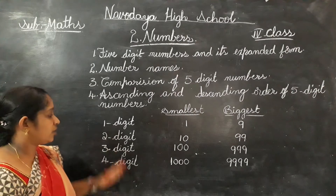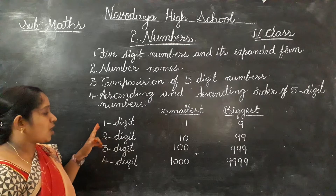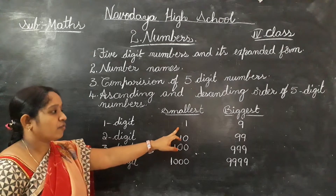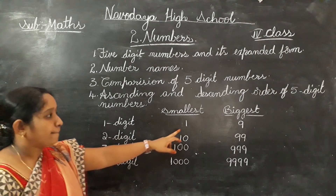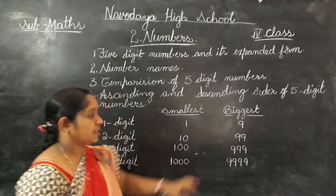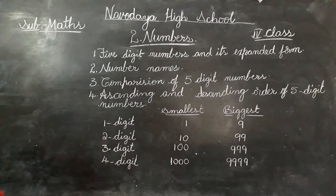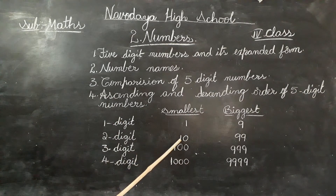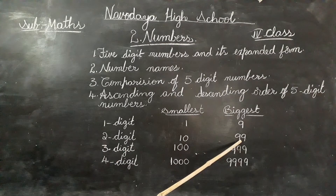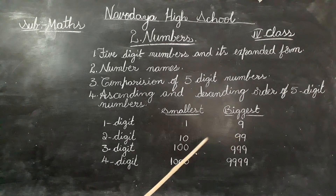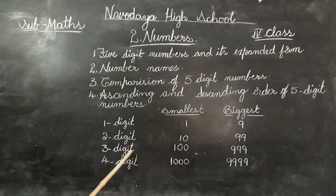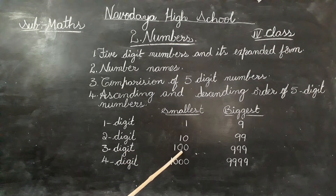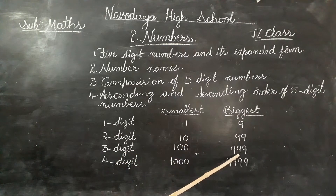Now look here, children. What is the smallest one digit number? One. The biggest one digit number is nine. What is the smallest two digit number? Ten. The biggest two digit number? Ninety-nine. What is the three digit smallest number? Hundred. Biggest three digit number? Nine hundred and ninety-nine.